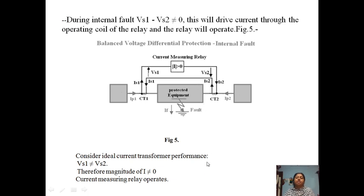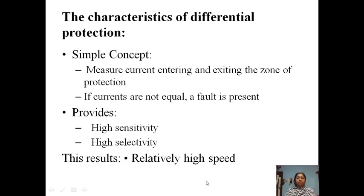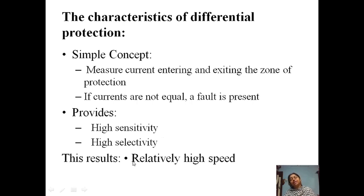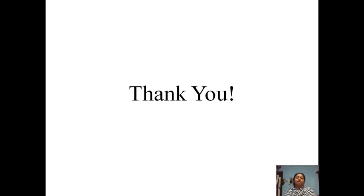The characteristics of differential protection include a simple concept: measure the current entering and exiting the zone of protection. If the currents are not equal, a fault is present; if the currents are equal, there is no fault. This provides high selectivity, high sensitivity, and relatively high speed compared to overcurrent protection. Thank you very much.